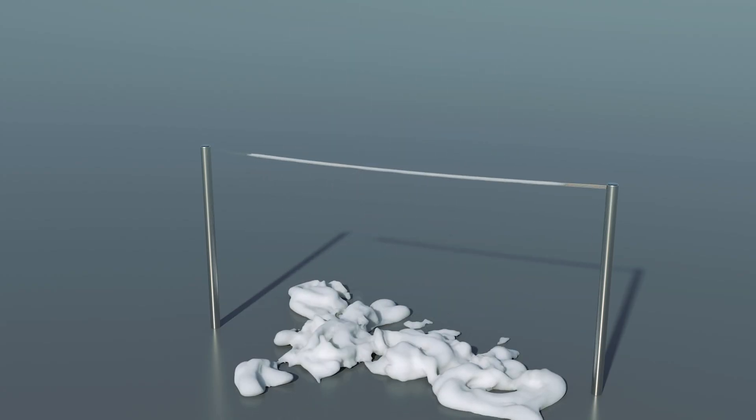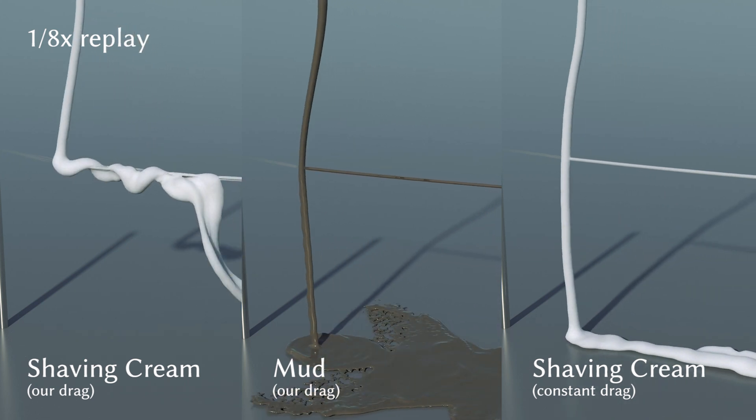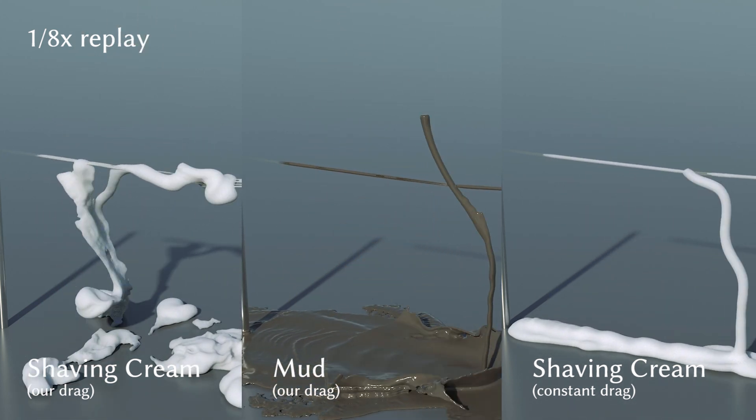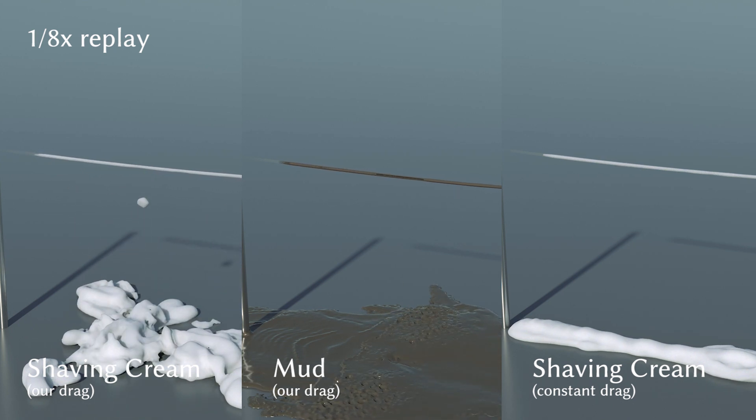We adopt the material-aware drag model to exchange momentum between strands and the bulk liquid. Our proposed drag coefficient yields a very different interaction behavior depending on the liquid type. If one were to use a constant drag coefficient, as is typical for Newtonian fluids, the cream would behave similar to mud since the yield stress and viscosity are not considered.